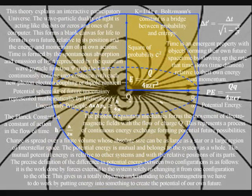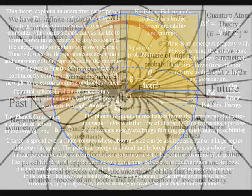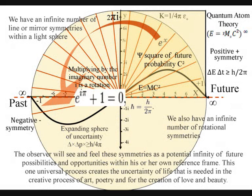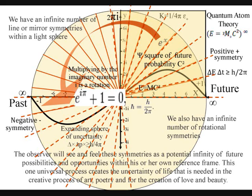This whole process can be seen as a process of spherical symmetry forming and breaking. There is an infinite number of line symmetries within a sphere and also an infinite number of rotational symmetries. This is where the infinities come from that we find in mathematics and this process also forms the potential infinity of possibilities and opportunities of everyday life.